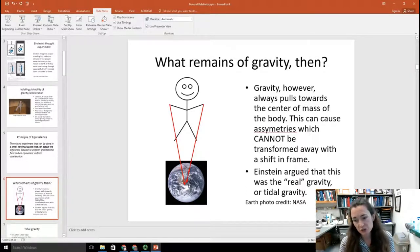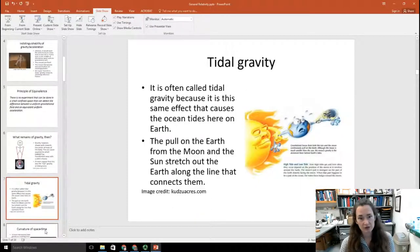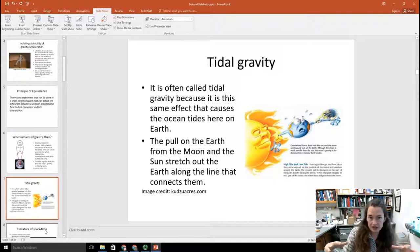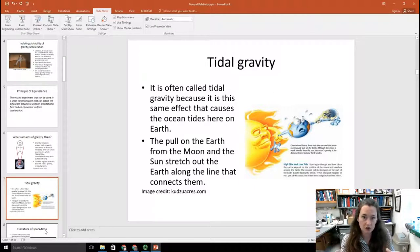Einstein argued that this was the real gravity. And it's also sometimes called tidal gravity. And it's called tidal gravity because this is the same effect that causes the ocean tides here on earth. So the pull on the earth from the moon and the sun stretch out the earth along the line that connects them, and that causes the oceans and some of the tides.